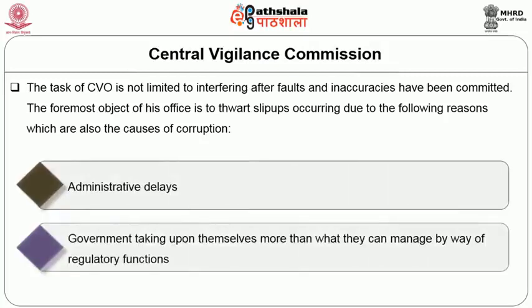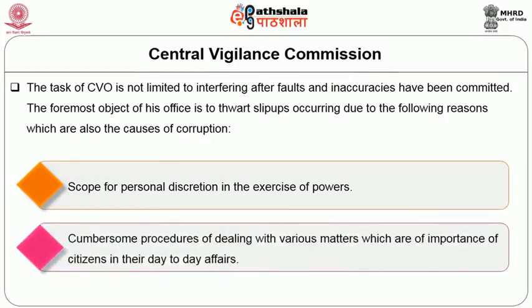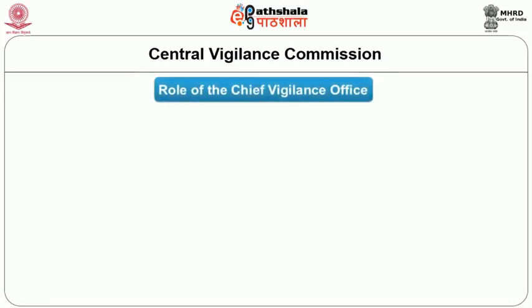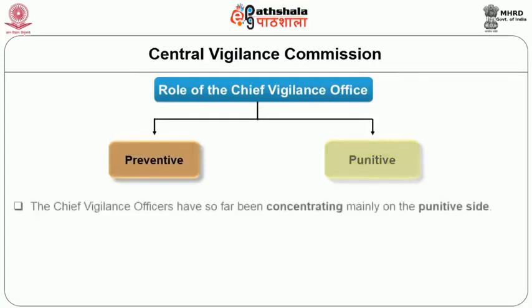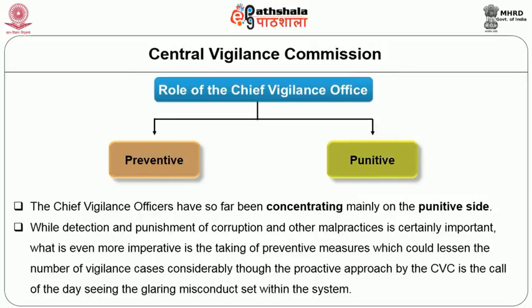The foremost object of the CVC is to thwart slip-ups occurring due to the following causes of corruption: administrative delays, government taking upon themselves more than what they can manage, scope for personal discretion in the exercise of powers, and cumbersome procedures for dealing with matters of importance to citizens in their day-to-day affairs. The role of the Chief Vigilance Officer may broadly be divided into two parts: preventive and punitive. The Chief Vigilance Officers have so far concentrated mainly on the punitive side. While detection and punishment of corruption is certainly important, what is even more imperative is taking preventive measures, which could lessen the number of vigilance cases considerably.